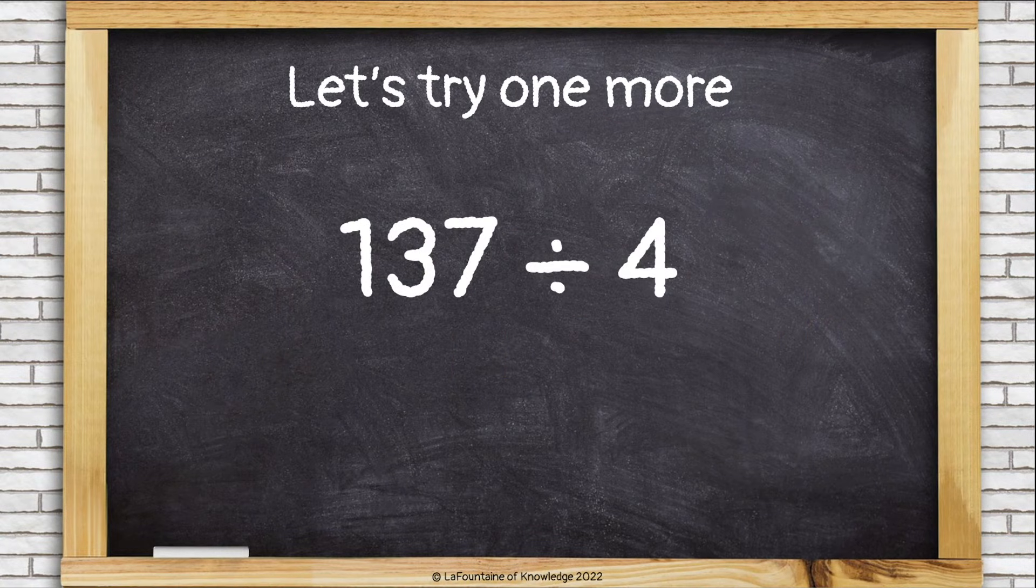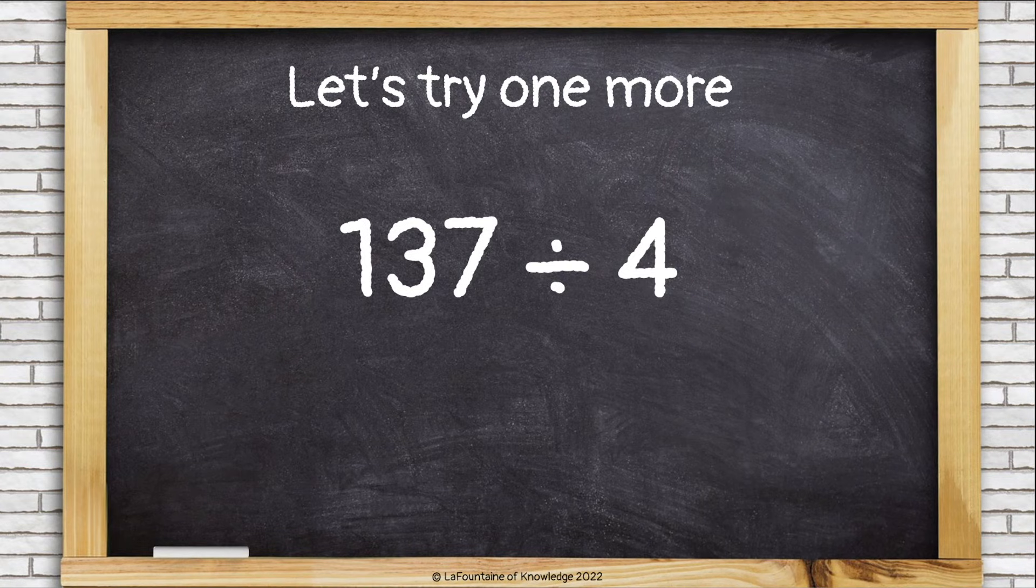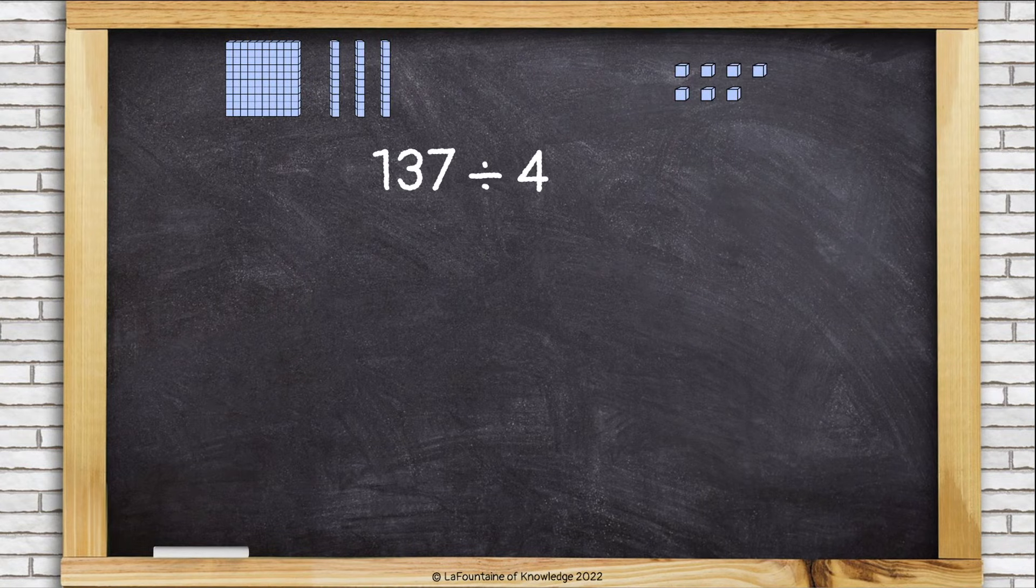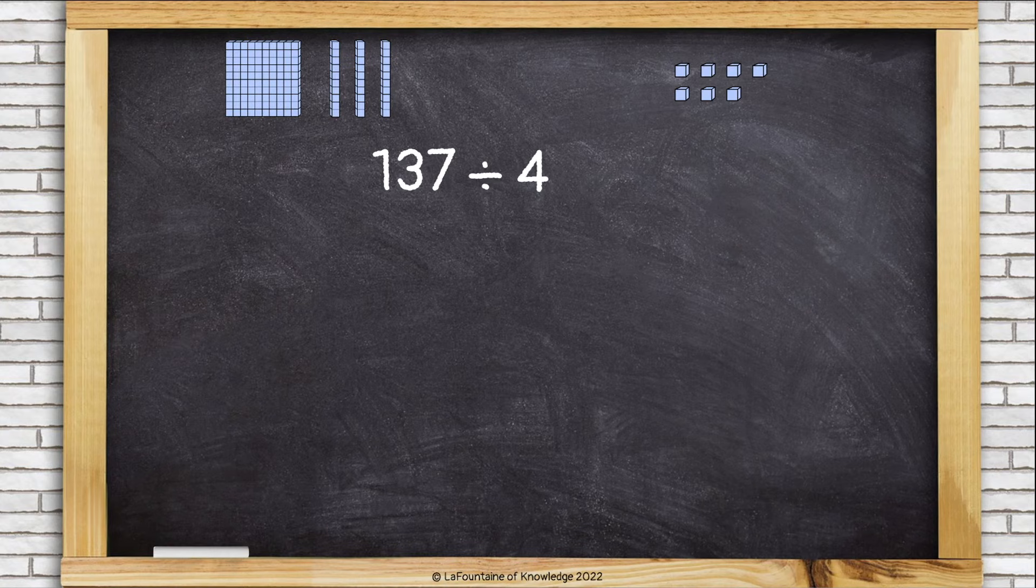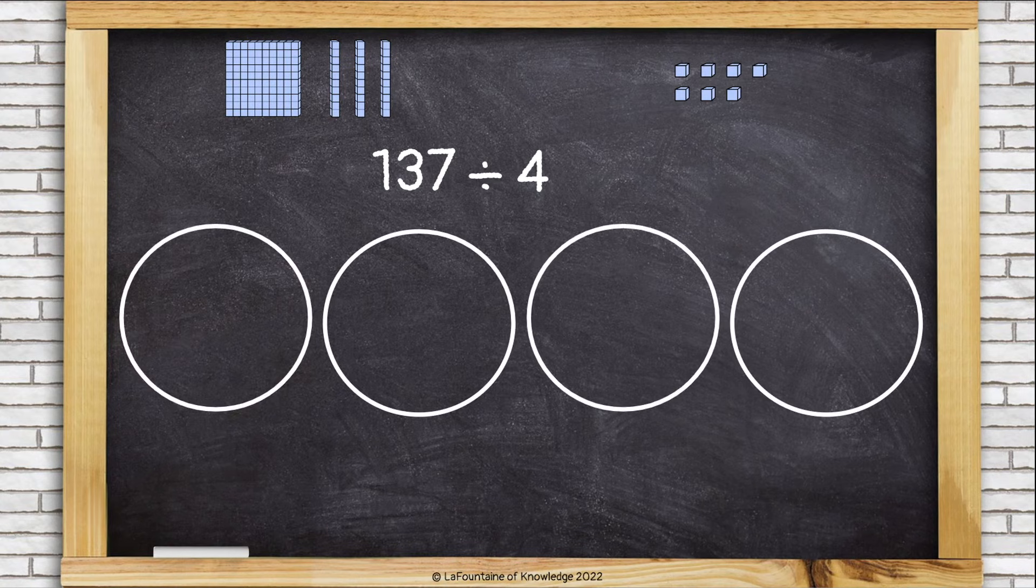Let's try one more. 137 divided by 4. All right, I'm starting with 100, three tens, and seven ones. And four groups.